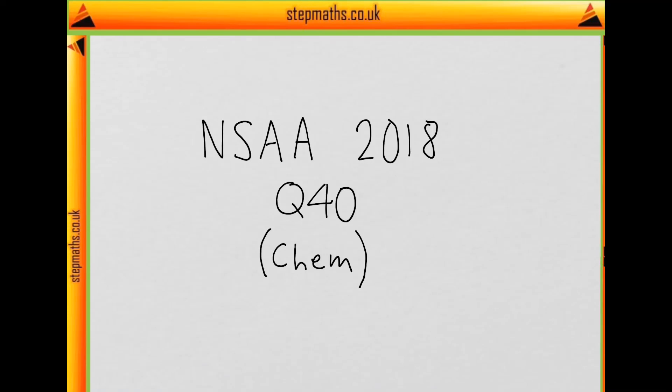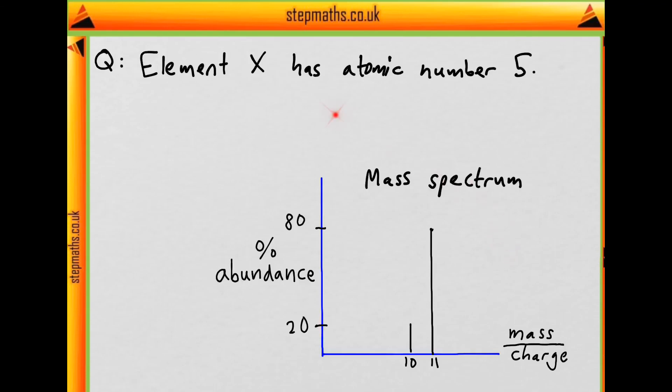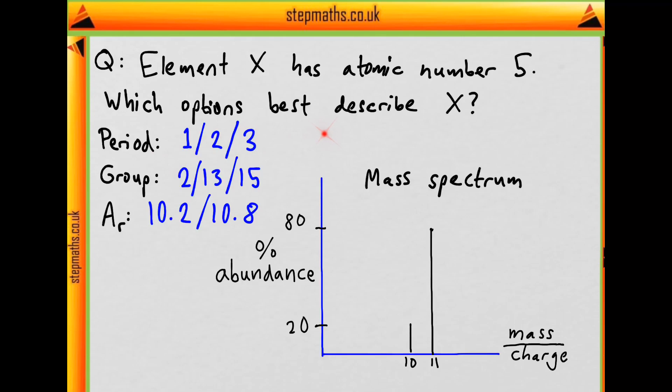This is question 40 on chemistry from the 2018 paper. We're told that element X has atomic number 5, and we're given its mass spectrum of mass-to-charge ratios against percentage abundance. Which of these options best describes element X?